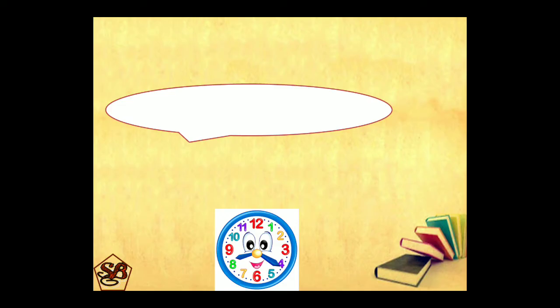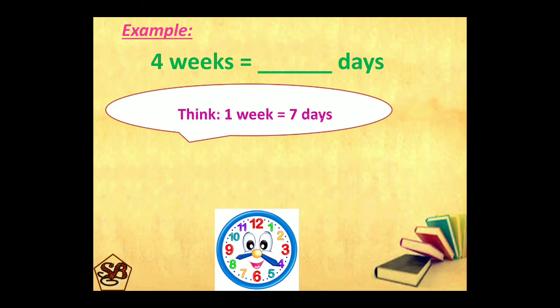Let's make it more clear with some examples. Here, we have to convert 4 weeks into days. Now, 1 week is equal to 7 days. So, multiplying 4 by 7 will give us 28. That means 4 weeks is equal to 28 days.